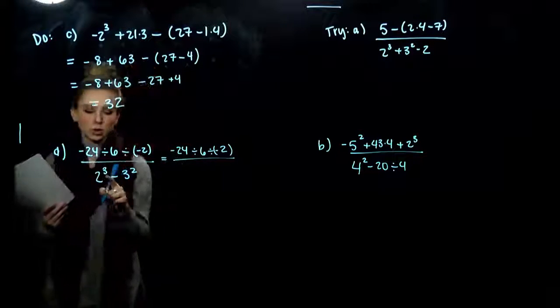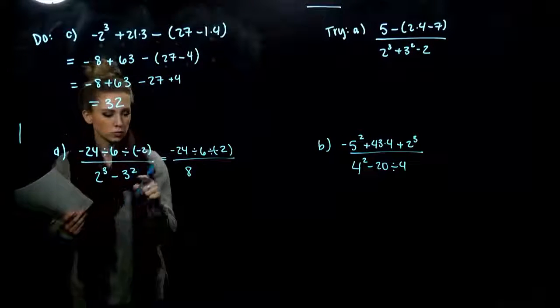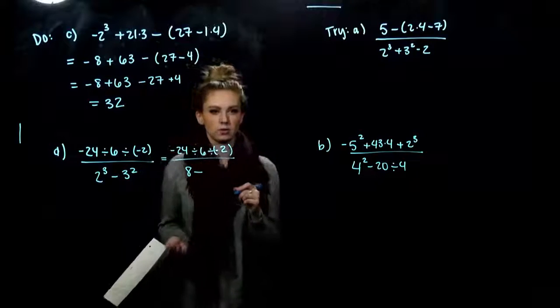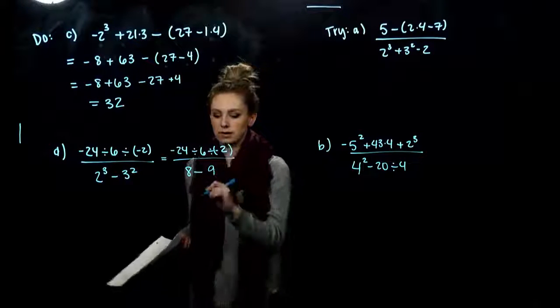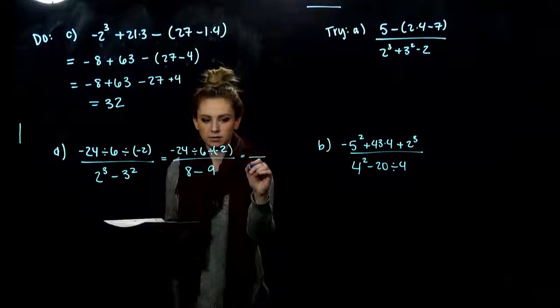So let's just calculate what's going on down here. I'm going to leave this for later. And what is 2 cubed again? We saw it earlier, but this time it's positive. 8. And we're subtracting 3 squared, which is 9. So altogether in the denominator, I'm going to be left with negative 1.